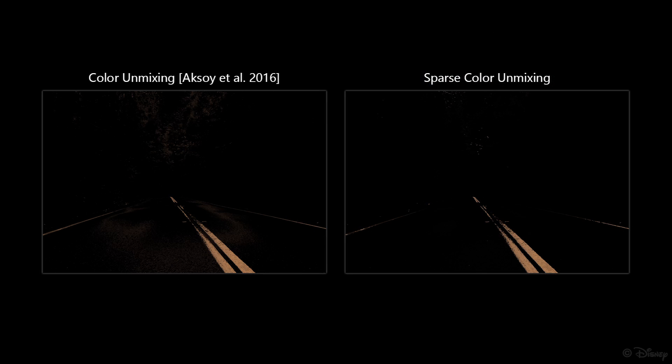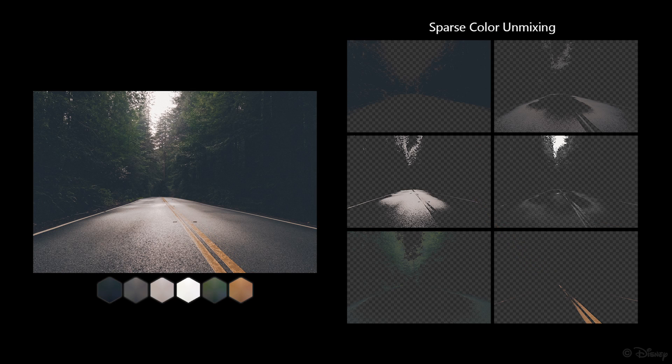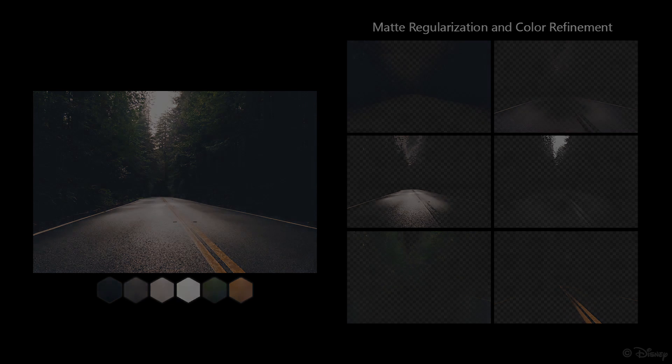When compared to the color unmixing method, sparse color unmixing does not suffer from the spurious alpha values, as seen near the trees and on the road here. In order to get high quality layers, we spatially regularize the alpha channels obtained using the sparse color unmixing, and then refine the layer's colors accordingly in a second optimization step.